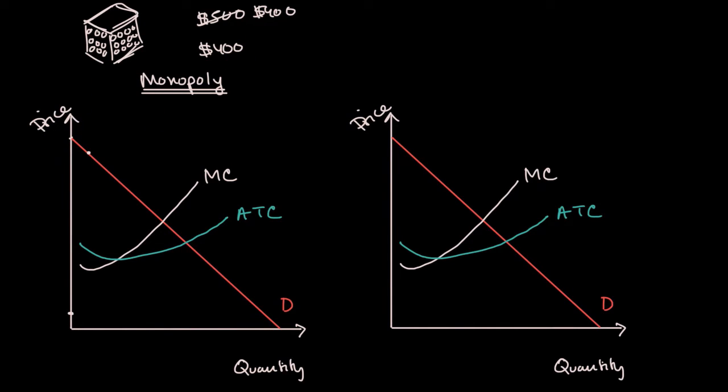And that's why, and we go into significant detail in other videos on this, and we do it with tables of numbers, and I encourage you to do that. That is why your marginal revenue curve for a monopoly has twice the slope, the negative slope, than your demand curve would have. So your marginal revenue curve would look something like this.